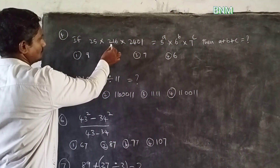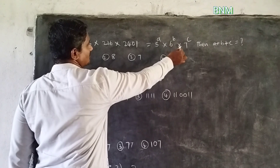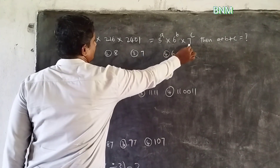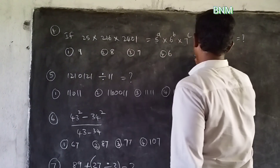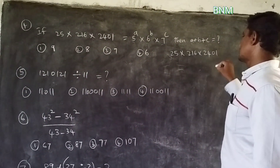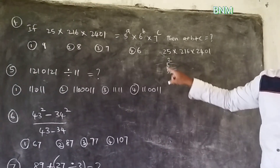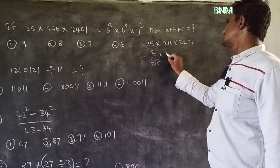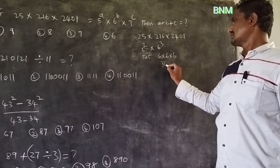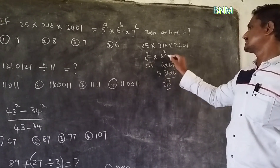25 into 216 into 2,401 equals 5^a into 6^b into 7^c. These are the numbers. 25 into 216 into 2,401: 5 squared is 25. Then 6 cubed — 6 into 6 into 6: 6 times 6 are 36, 36 times 6 — 6 times 36: these are 18 plus 3 — 216. That is 6 cubed.